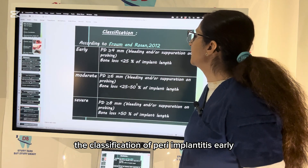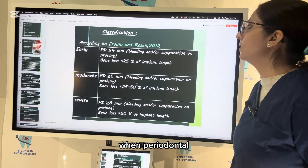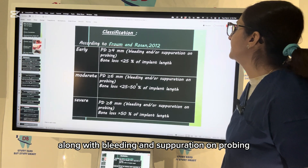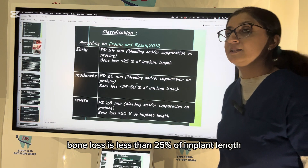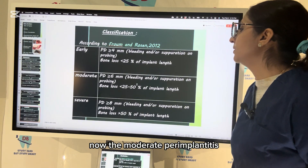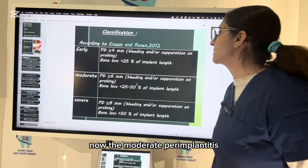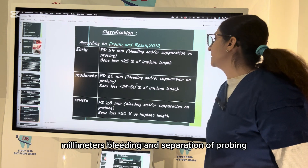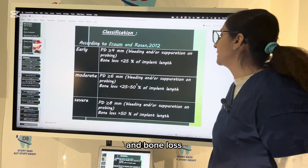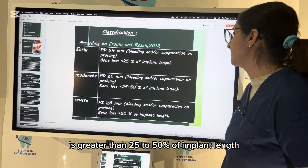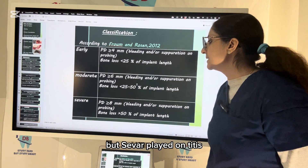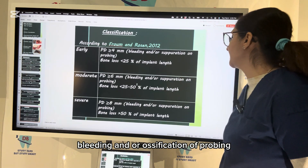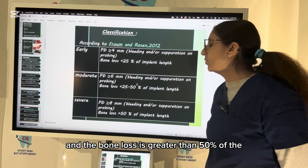The classification of peri-implantitis: Early — when periodontal pocket depth is greater than or equal to four millimeters along with bleeding and suppuration on probing, and bone loss is less than 25 percent of implant length. Moderate — when probing depth is greater than or equal to six millimeters, bleeding and/or suppuration on probing, and bone loss is 25 to 50 percent of implant length. Severe — probing depth greater than eight millimeters, bleeding and/or suppuration on probing, and bone loss greater than 50 percent of implant length.